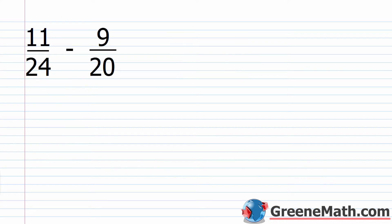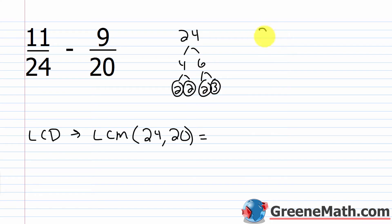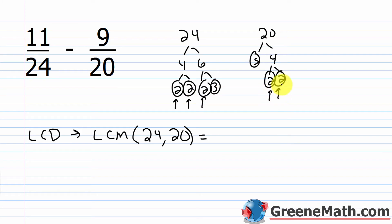Let's look at one more example with fractions: 11 over 24 minus 9 over 20. The LCD is the least common multiple of 24 and 20. I factor 24 as 4 times 6: 4 is 2 times 2, and 6 is 2 times 3. For 20, I do 5 times 4, and 4 is 2 times 2. Now building my list: with the factor 2, I have three of them in 24's factorization and two in 20's, so I go with the largest number of repeats — that's 3 — giving me 2 times 2 times 2, or 8.